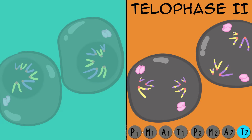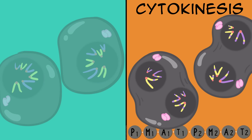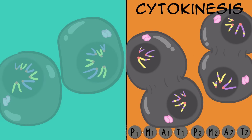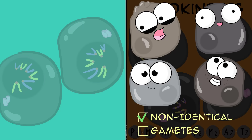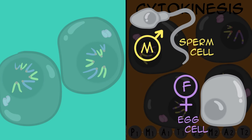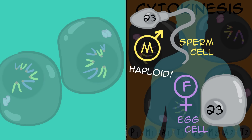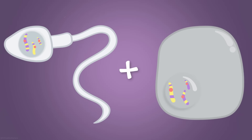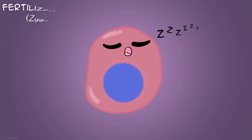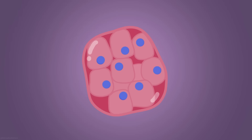Telophase 2: chromosomes are at the complete opposite ends and new nuclei are forming on each side. Cytokinesis will follow meiosis 2 to completely split the cytoplasm. We are now finished with meiosis and we end with four non-identical cells—gametes. Males make sperm cells in meiosis and females make egg cells in meiosis. These gametes are haploid, meaning they have half the number of chromosomes as the original starting cell. In humans, the resulting cells would each have 23 chromosomes. When a sperm and egg cell combine, it results in a diploid cell—a fertilized egg, otherwise known as a zygote—which will then start a series of divisions using mitosis to give rise to a brand new organism.